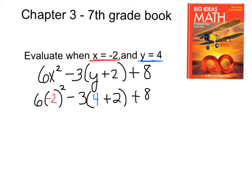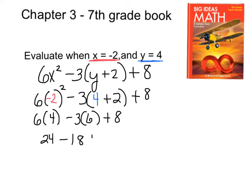Now we simplify. We have to follow order of operations. Negative 2 to the second power is 4. 4 plus 2 is 6. I now would multiply, so that would give me 24 minus 18 plus 8. I go left to right, and 24 minus 18 plus 8 will give me 14. So the correct answer you should have gotten was 14.